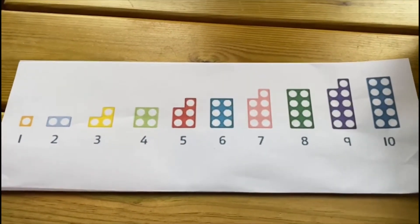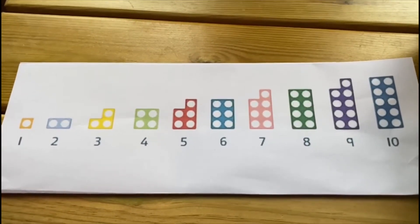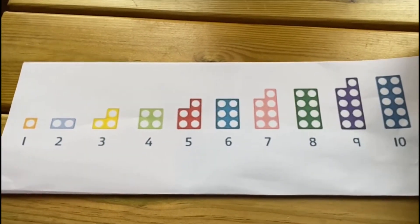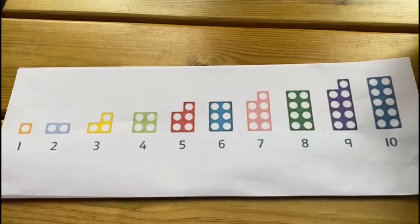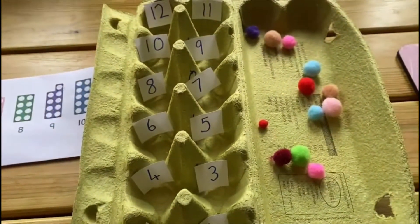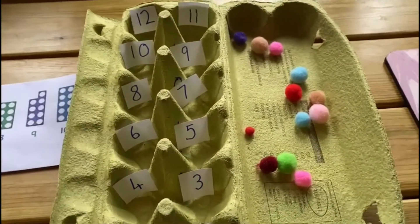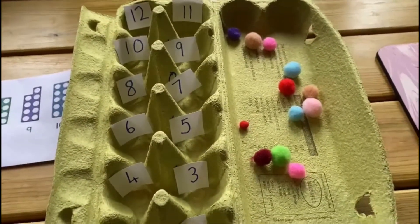The number two piece is always blue and always that shape. The number five piece is always red and that shape. Today we're going to use this egg box to try and mirror the patterns for the numbers.